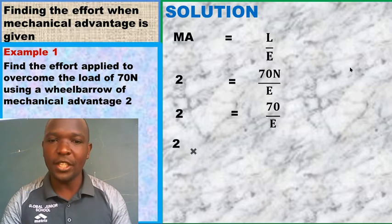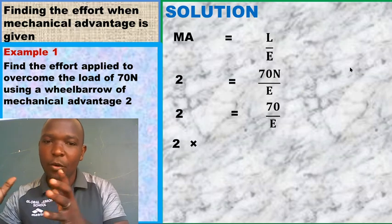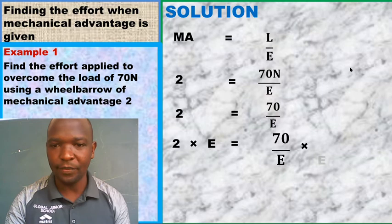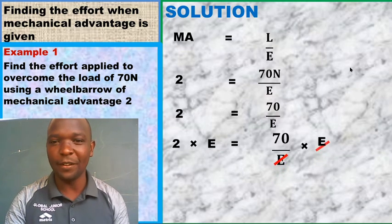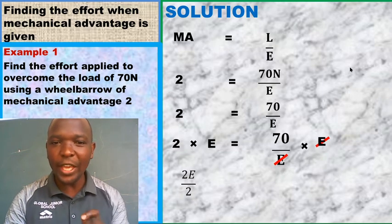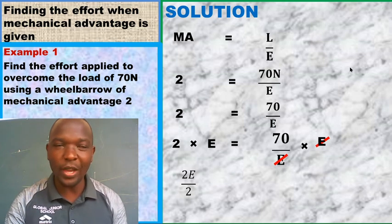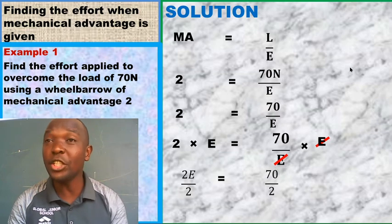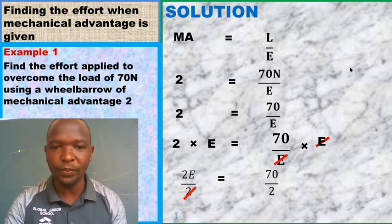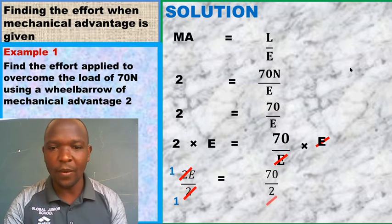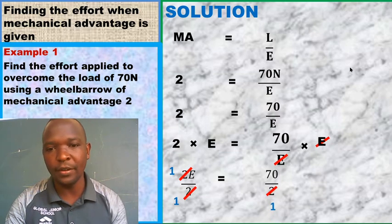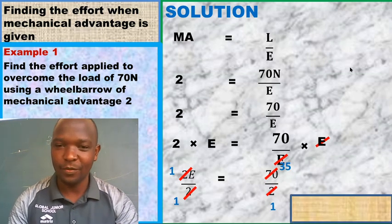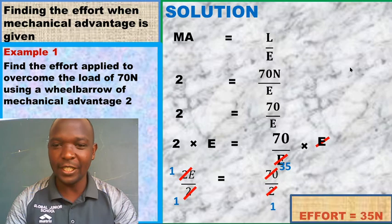To find E, multiply both sides by E: 2E equals 70. Then divide both sides by 2: E equals 70 divided by 2, which equals 35. Our effort E equals 35 newtons. We have found the effort by substituting into the mechanical advantage formula and solving algebraically.